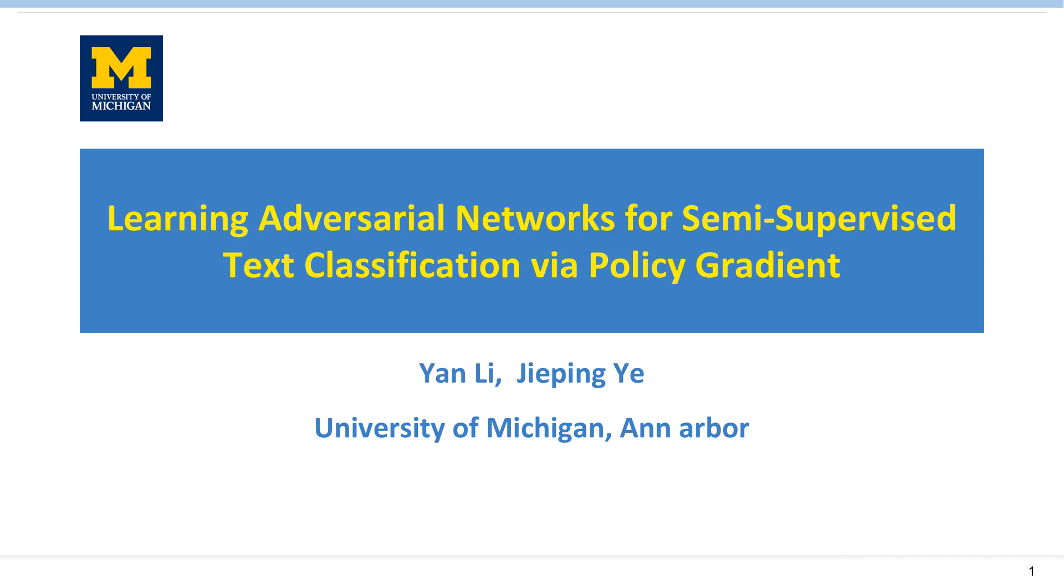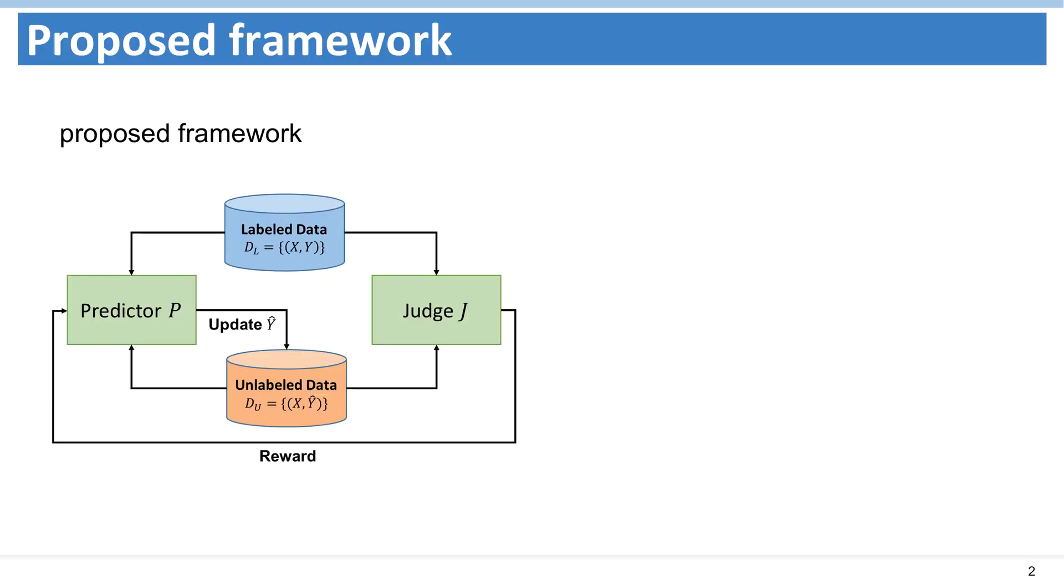This video is a brief introduction of the paper Learning Adversarial Nets for Semi-Supervised Text Classification via Policy Gradient. The figure shown here illustrates the framework of the proposed model.